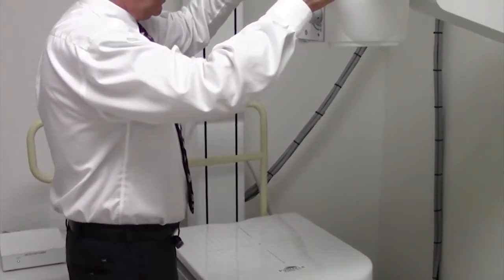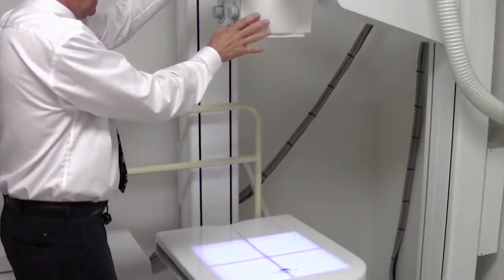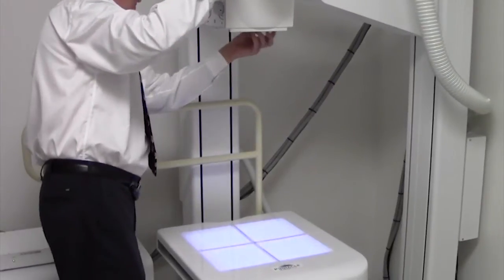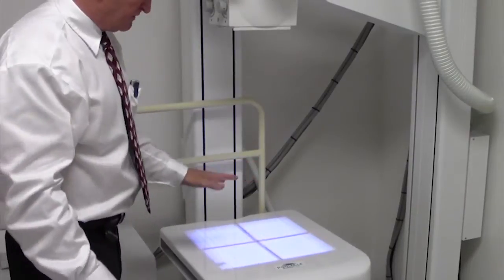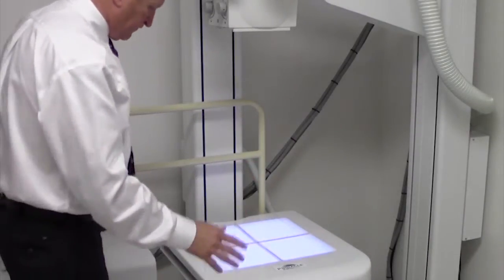Bring the tube stand over. Adjust it for the 40 inch FFD and you can do any upper extremity, lower extremity.